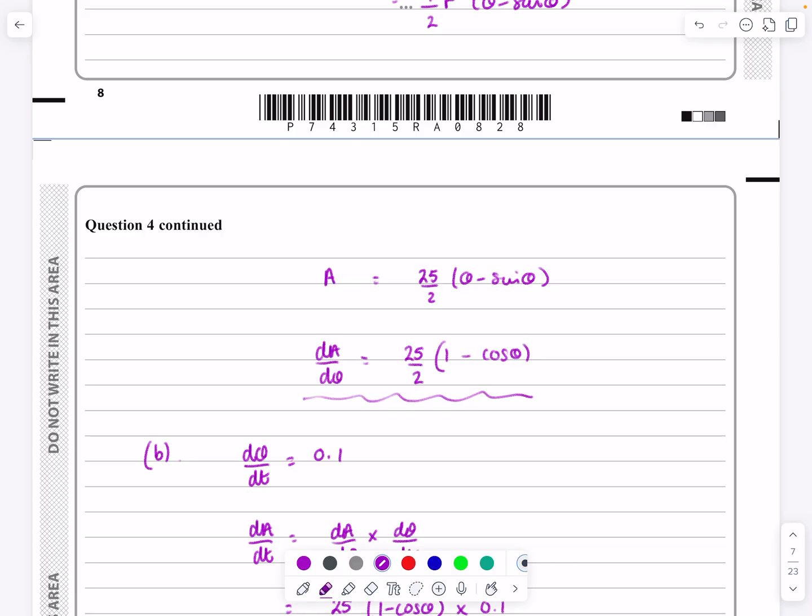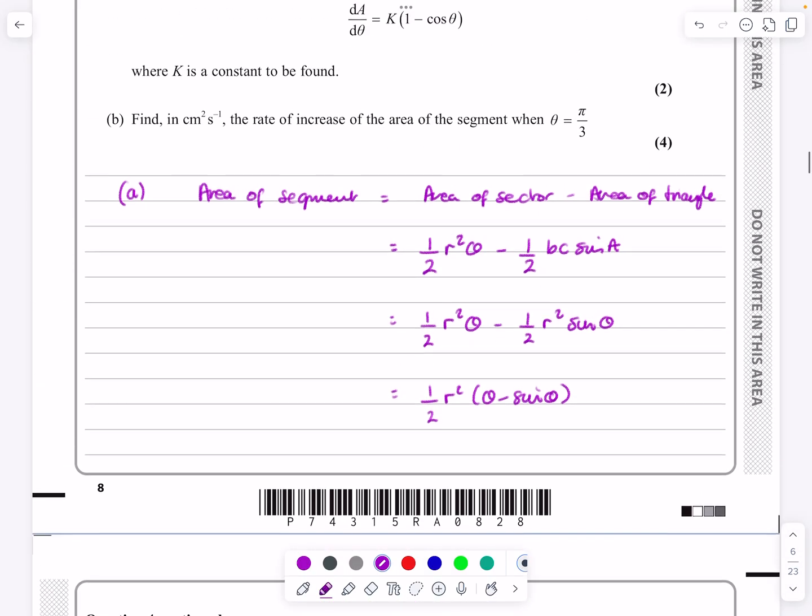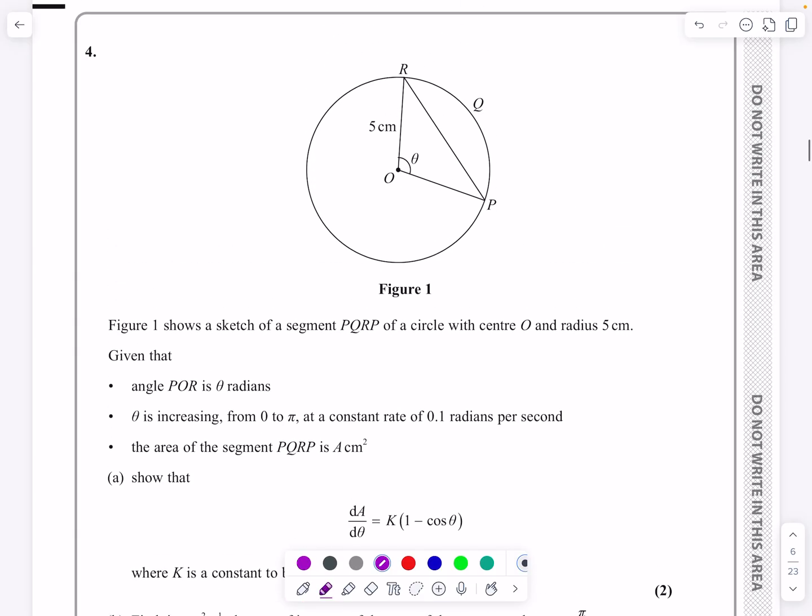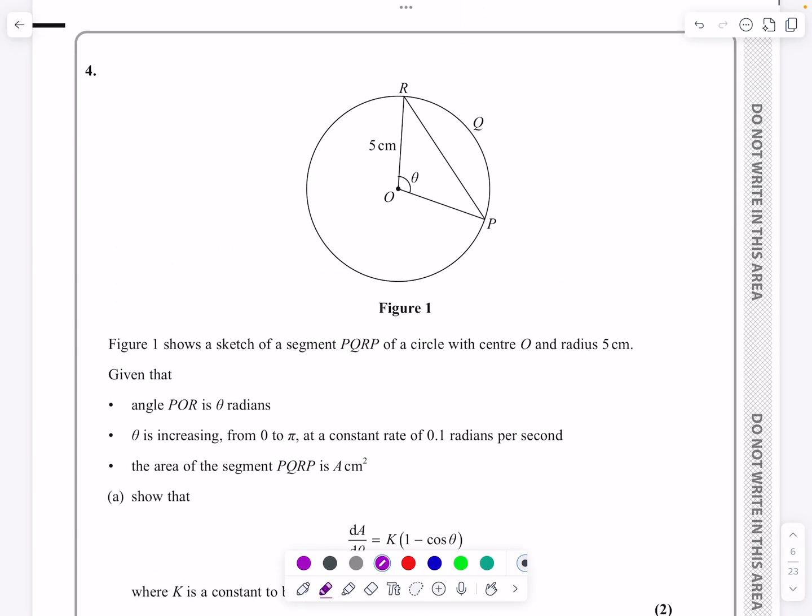just be careful with making sure you got the units on the first part as well, dA by dt. That's just a formula, but for any answers, make sure you've got the units in there just to be careful. But yeah, that's a very easy, straightforward question number four. Hopefully that will make sense to you.